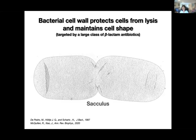The cell wall is a very important molecule for bacterial cells. It protects cells from lysis and maintains cell shape. You probably know that the cell wall is the first target of the first antibiotic humans made — beta-lactam, penicillin — which saved millions of lives during World War Two. It targets cell wall synthesis enzymes, because without the cell wall, the cell lyses and dies. Here I'm showing you an EM image of a sacculus, which is simply the isolated cell wall.